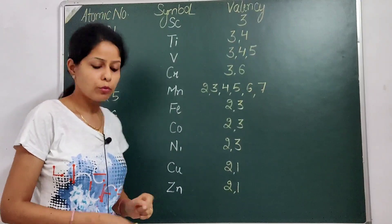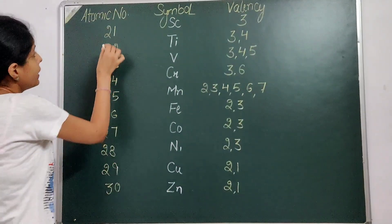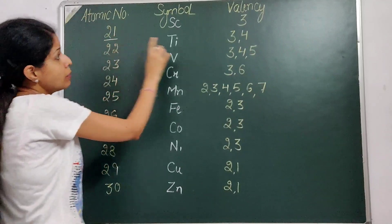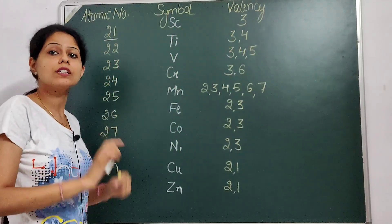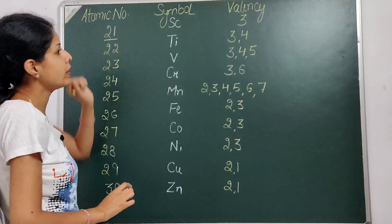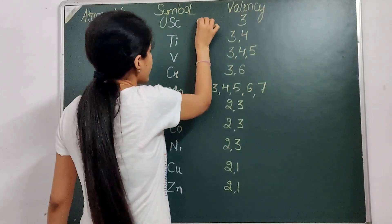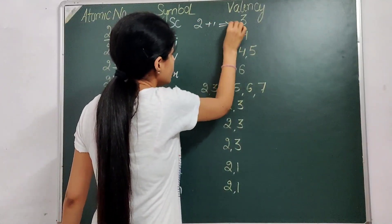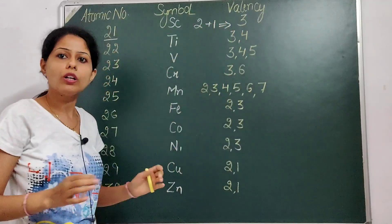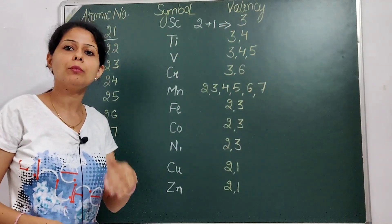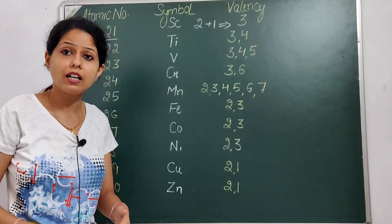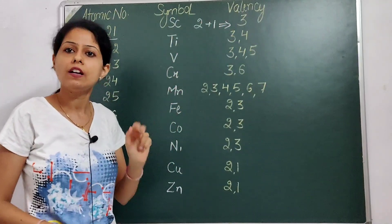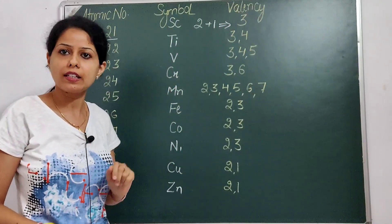To remember Scandium's valency, here is the trick: the valency 3 comes from adding the digits of its atomic number. 21 — add 2 plus 1, which gives 3. So if you remember Scandium's atomic number, just add 2 plus 1 to get 3 — that is Scandium's valency.